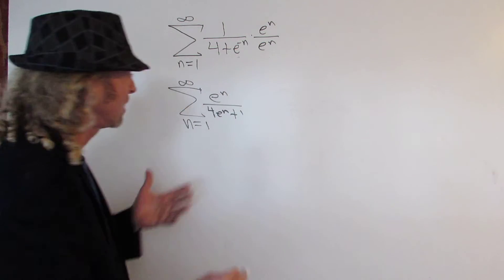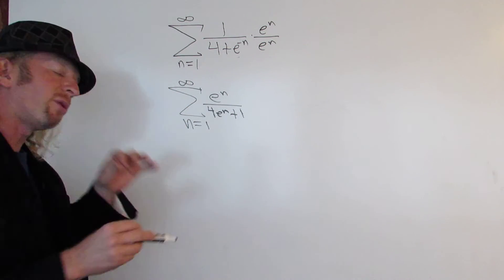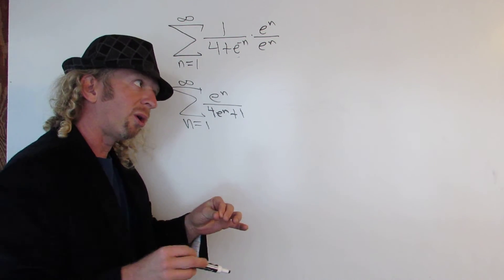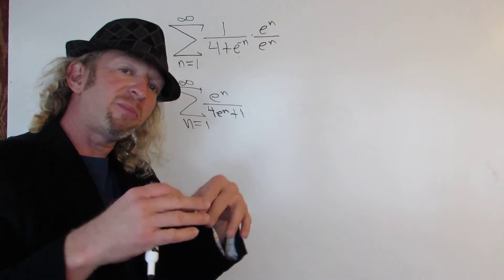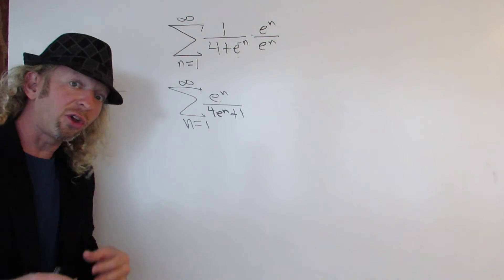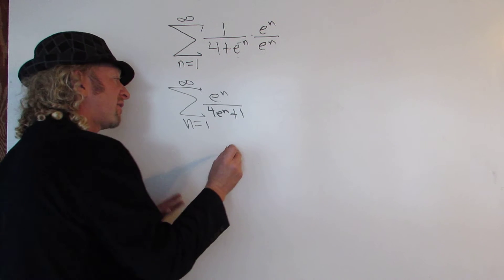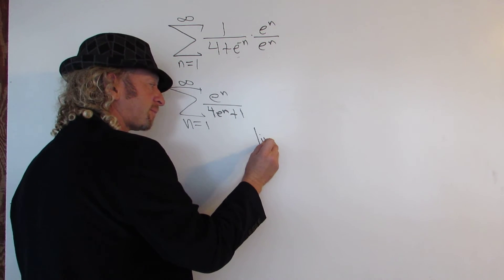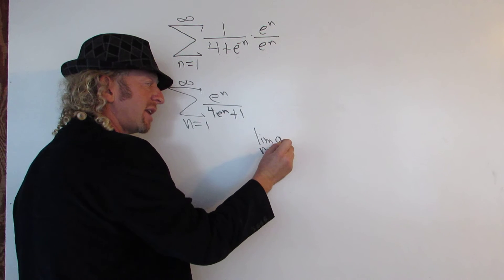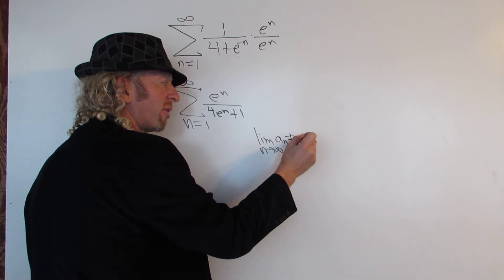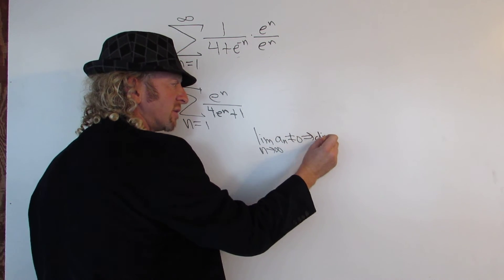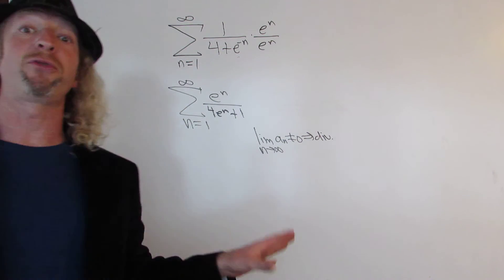And now we can use the most important or the most useful, or maybe not the most useful, the test that you typically use first, which is called the nth term test. The nth term test says if you take the limit as n approaches infinity of a sub n and it's not equal to 0, then the series diverges. If it's equal to 0, the test will fail.